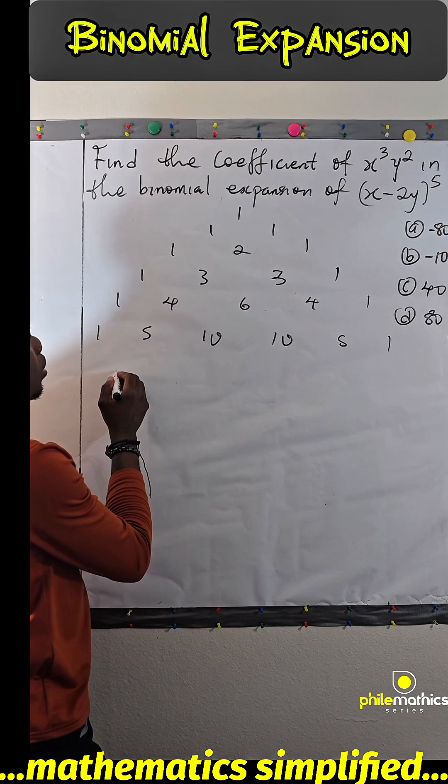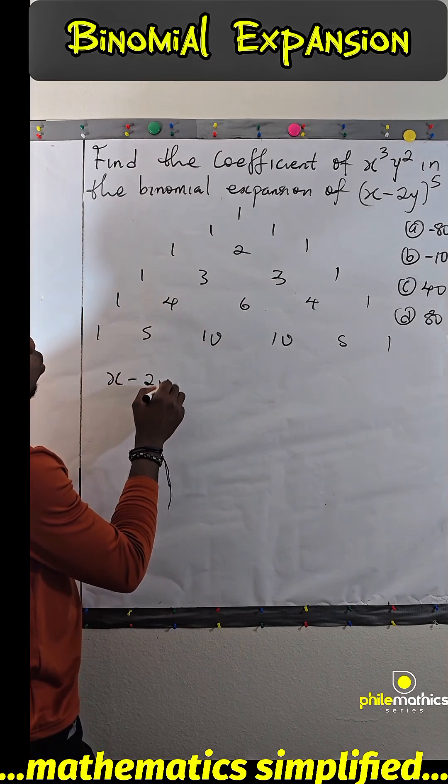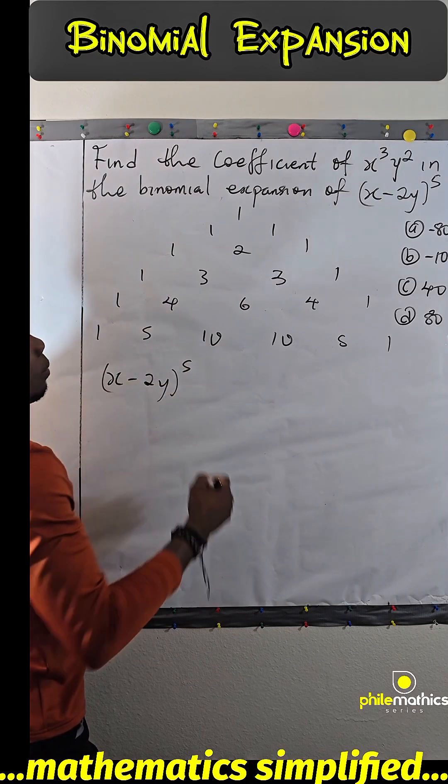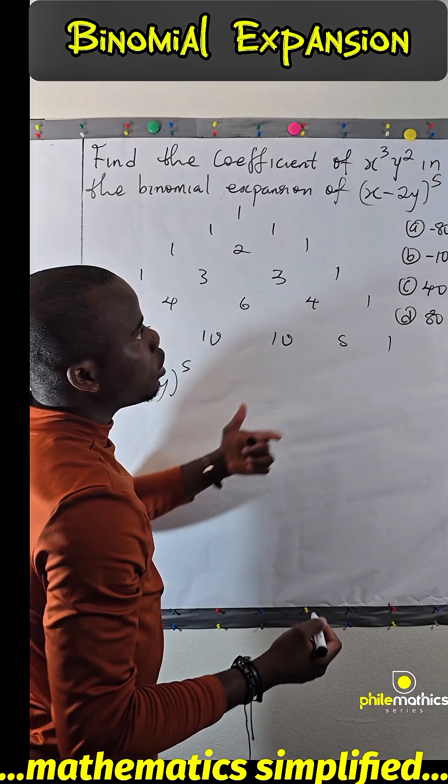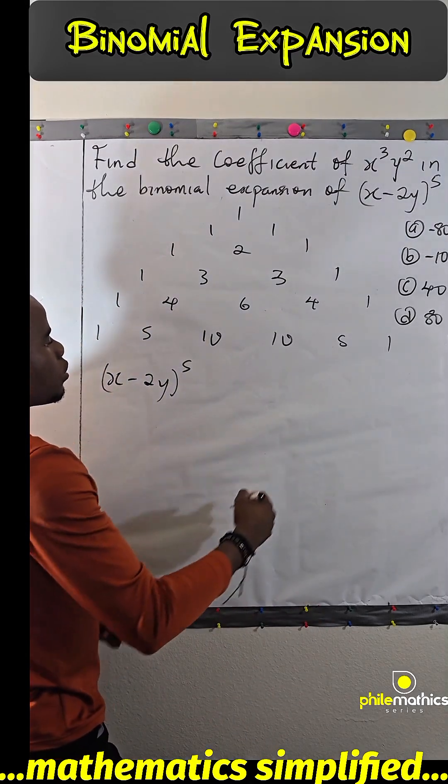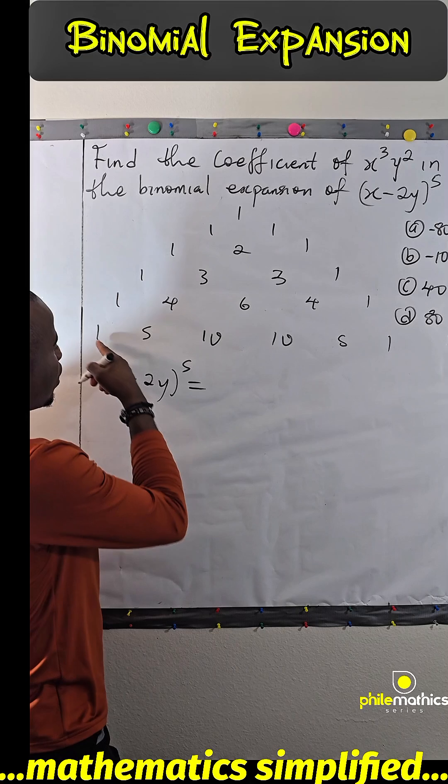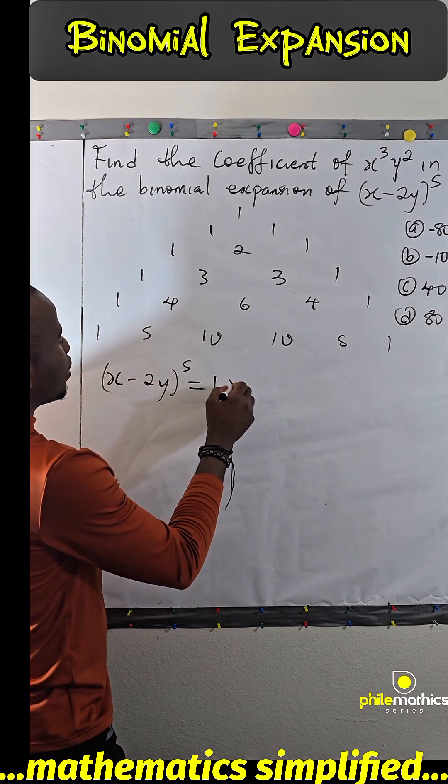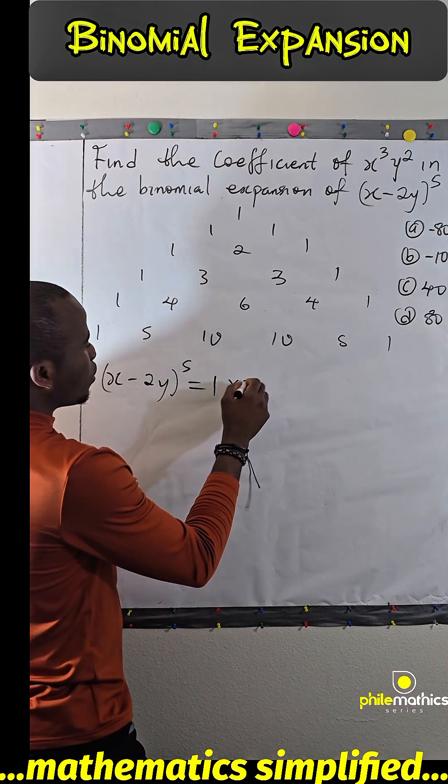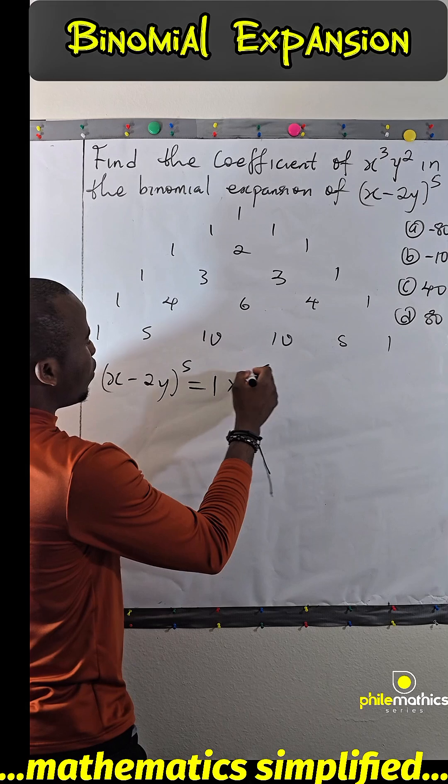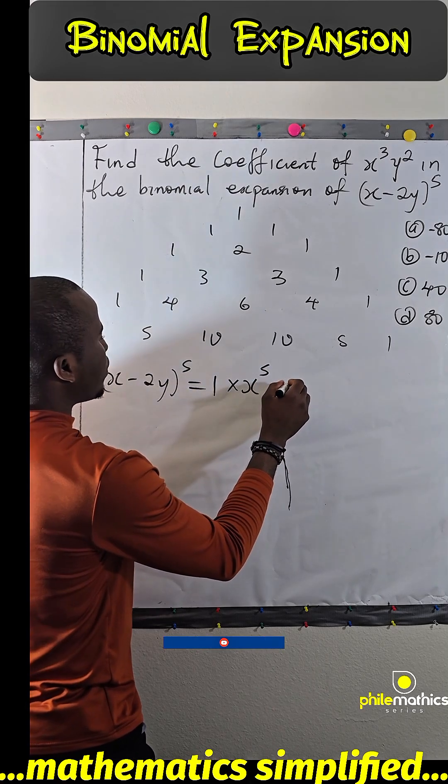You start with coefficient 1 times x to the power 5, and this would be times (-2y) to power 0.